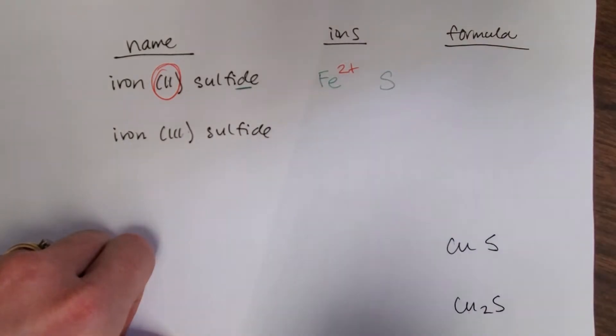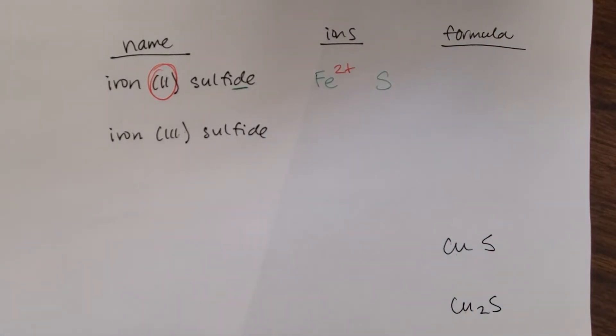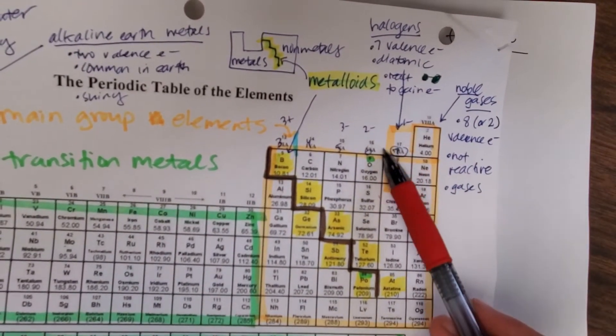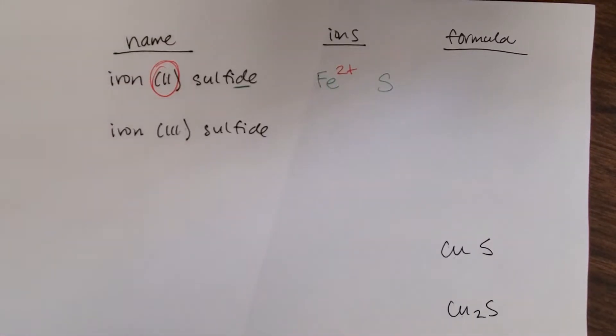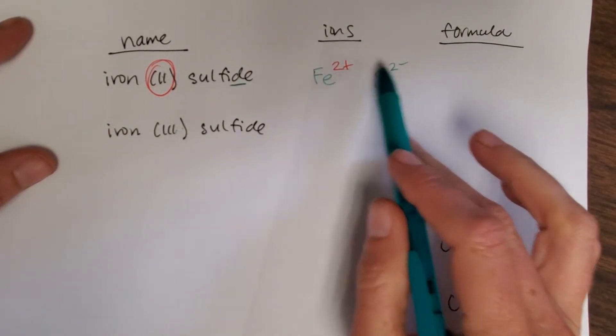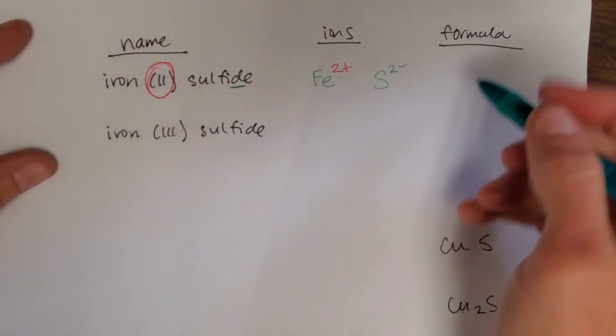Then sulfide has that -ide, so it's telling me that it's just sulfur by itself. If I want to know the charge of that, I want to take a look at my periodic table. Here's sulfur, it's in group 6A, so it's got a charge of negative two. I can see that those charges match each other or balance each other out, so then my formula would just be FeS.